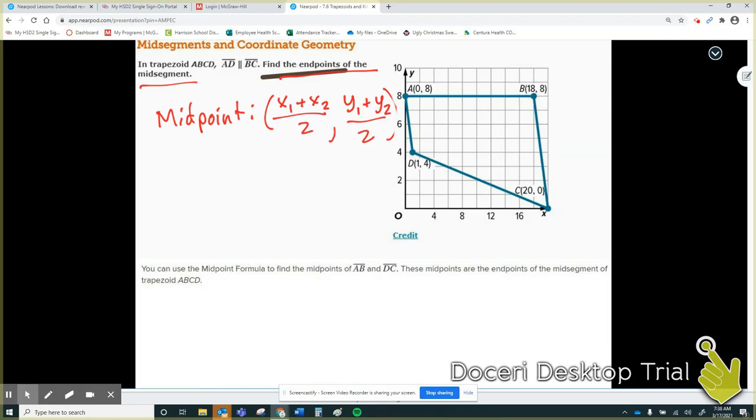My two x values are 0 and 18. So if I want to find my midpoint, I'm going to do 0 plus 18 divided by 2. That will find me the x-coordinate of my midpoint on top. Now in red, let's do the y values. My y value of A is 8 and the y value of B also happens to be 8. So I'm going to do 8 plus 8 divided by 2. When I crunch these numbers, 0 plus 18 is 18. 18 divided by 2 is 9.